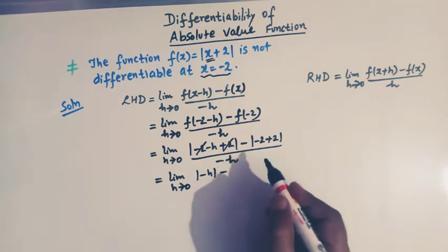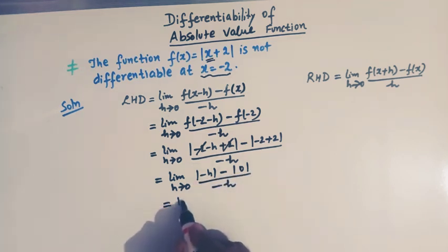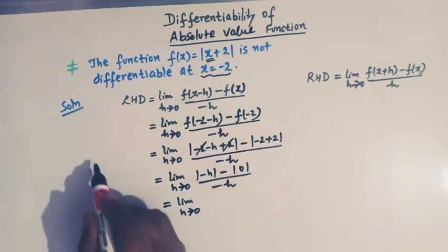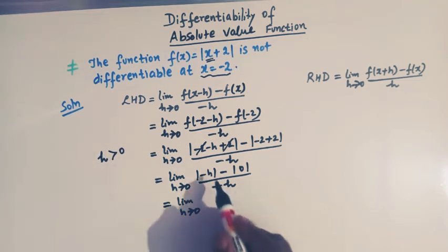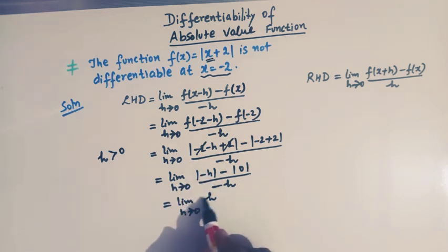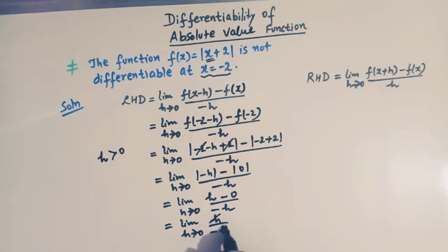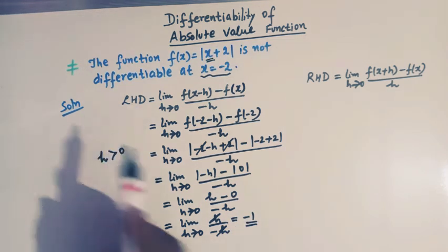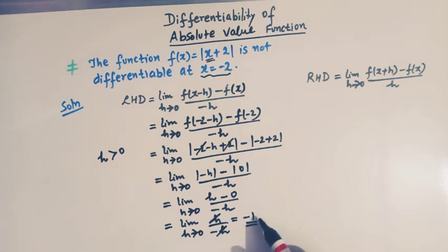Simplifying the numerator: the 2 and -2 cancel, so we have |-h| minus |0|, divided by -h. Now h is a very small positive quantity, so |−h| = h, and |0| = 0. This gives limit h→0 of h / (-h), and h cancels, so we have -1. The left-hand derivative at x = -2 is -1.